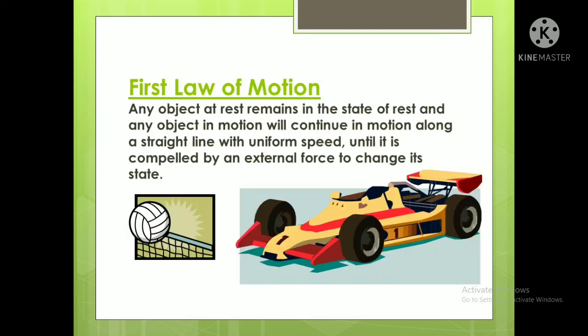The First Law of Motion states: any object at rest remains in the state of rest, and any object in motion will continue in motion along a straight line with uniform speed — meaning no change in speed — until it is compelled by an external force to change its state.